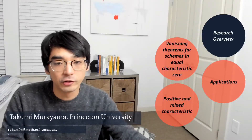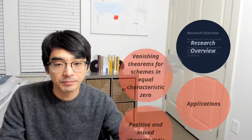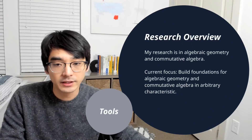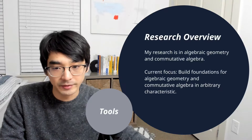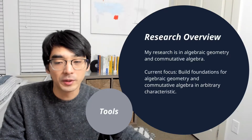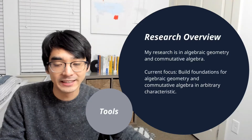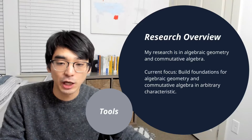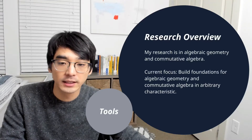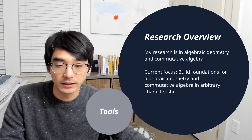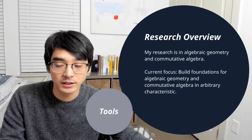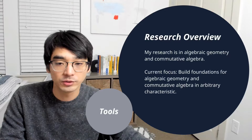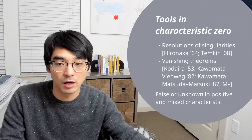Let me start with a brief overview of my research. My research is in algebraic geometry and commutative algebra. One current focus I have is to build the foundations necessary for algebraic geometry and commutative algebra in arbitrary characteristics. To describe these foundations, it's first important to describe some important tools that we use over the complex numbers.